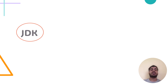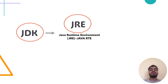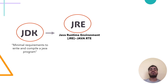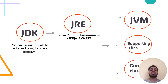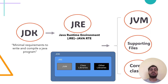Now let's have a look at the components of JDK. Java Runtime Environment is primarily part of JDK and it is also termed Java RT. JDK provides the minimal amount of requirements to write and compile a Java program. JRE consists of JVM, supporting files and other core classes. The JVM is key to both JDK and JRE because it is embedded into them.